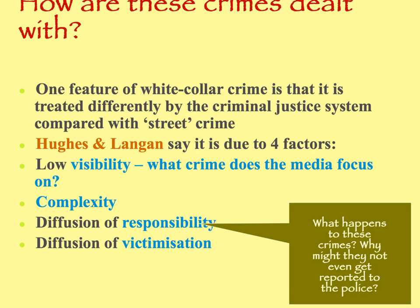So how are these different types of crimes dealt with? One feature of white-collar crime is that they're treated very differently by the criminal justice system compared to street crime. Hughes and Langham say it's due to four factors. Low visibility: the media generally focuses on street crime because it's newsworthy and interesting, while white-collar crimes are very complex and quite difficult to catch, let alone convict. You've also got diffusion of responsibility — for example, with BP's oil spillage, no one went to jail; they were fined and economic sanctions were used to punish them, because there's no one individual they can pin the blame on, even though 11 people were killed.